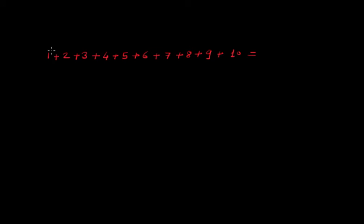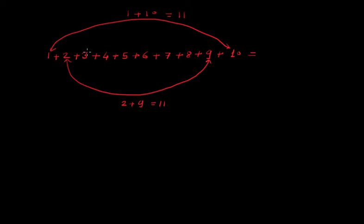We have to add the number like first number and the last number. So this will become 1 plus 10 equal to 11. Then add the second number with second last number. So this will become 2 plus 9 equal to 11. Similarly you can go ahead.